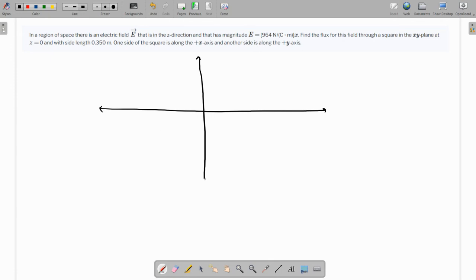So this is the coordinate plane and we have a square over here which looks like this. One side is towards the plus X axis and another side is towards the plus Y axis and this is 0.35.